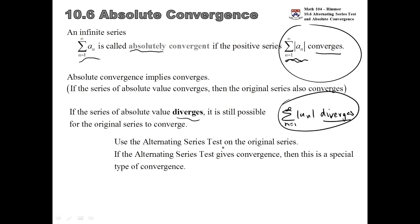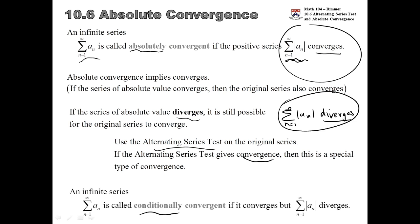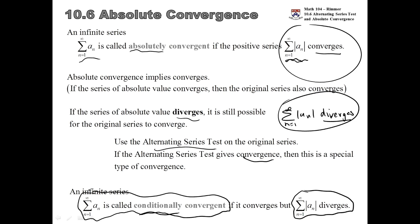When you take the absolute value and get divergence, but then go back to the original and try the alternating series test — most likely it's the alternating series test — if that turns around and tells you convergence, it's not like they're disagreeing. It's just a different type of convergence. That type is called conditional convergence. When you take the positive terms and get divergence, but you take the original series with all the positives and negatives and somehow recover convergence, that's called conditional convergence.